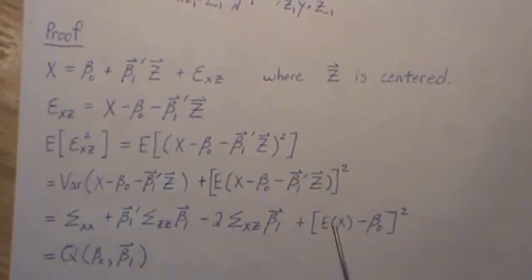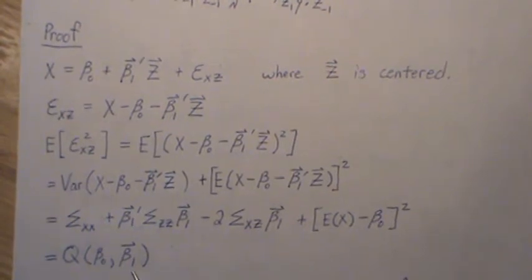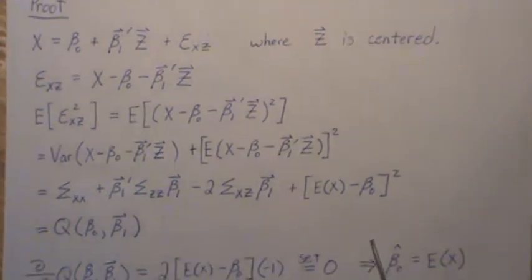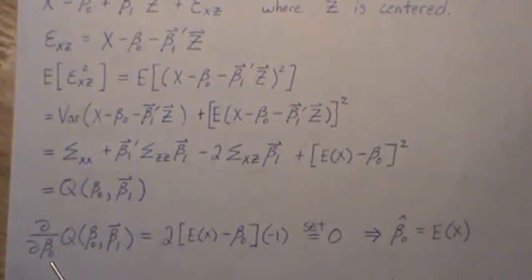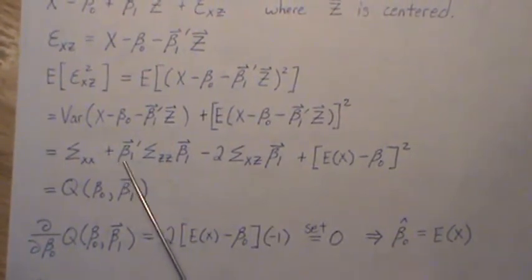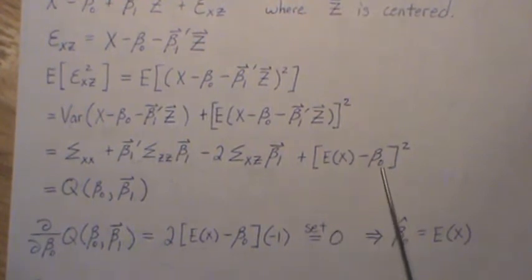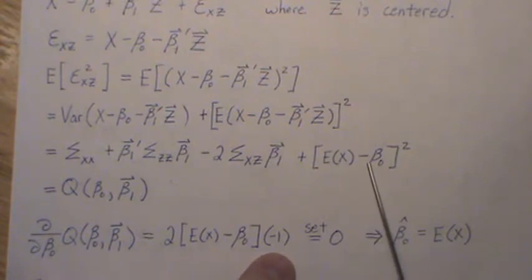Now, let's call this a function of beta_0 and beta_1. Beta_1's a vector. Now, the partial derivative of q with respect to beta_0, these are all constant, becomes here, so we get two and then times the expected value minus beta, chain rule, times minus one, set it to zero, solve for beta_0.